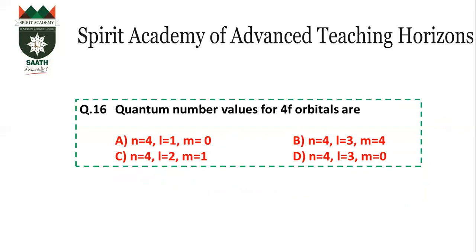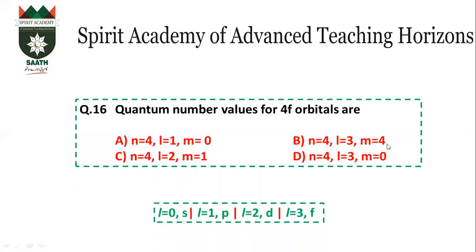Question number 16: Quantum number values for 4F. For 4F: N=4 and since it is F, L=3. So A and C cannot be answers. Between B and D, remember that M can never be greater than L. L=0 is S, L=1 is P, L=2 is D, L=3 is F. Since F means L=3, and M cannot exceed L, the answer is D.